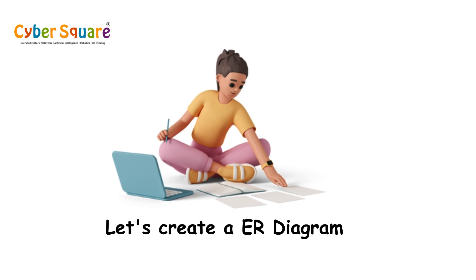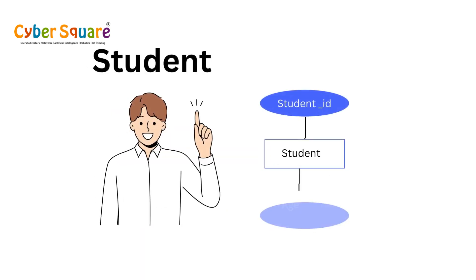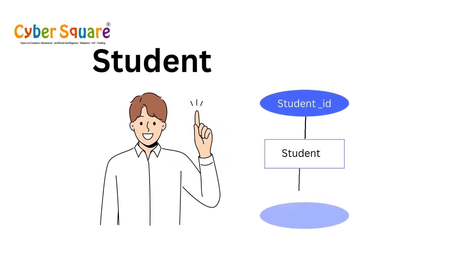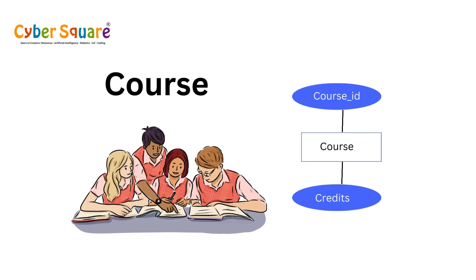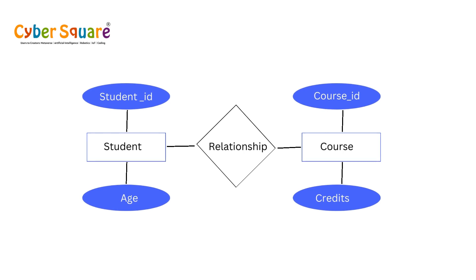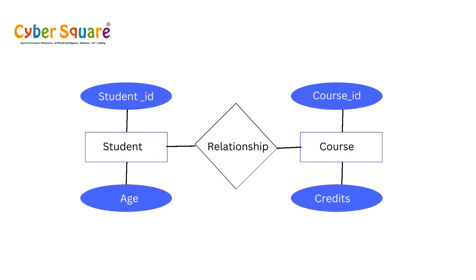Now, let's create an ER diagram. Since the student is an entity, it is shown as a square, and its attributes, such as Age and Student ID, are represented as ovals. The course is also an entity shown as a square, with ovals representing its attributes including Course ID and Title. The connection between a student and a course is shown by drawing a line between them, signifying that students can take multiple courses and courses can have multiple students enrolled in them.